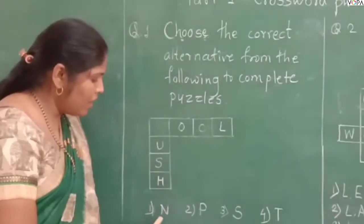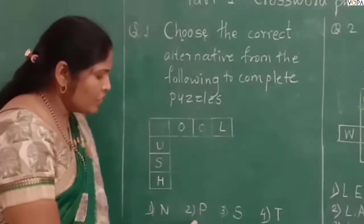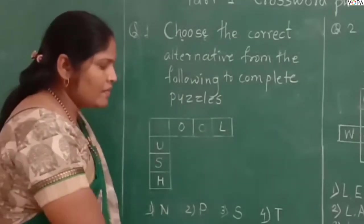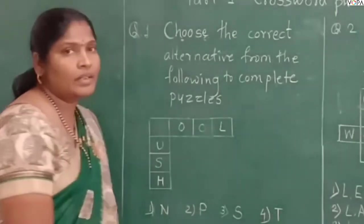Here we have the options. First option is N, second option is P, third option is S, and fourth option is T.